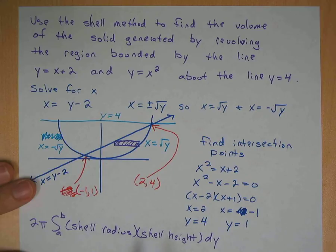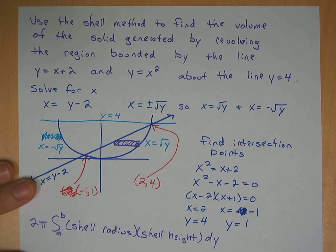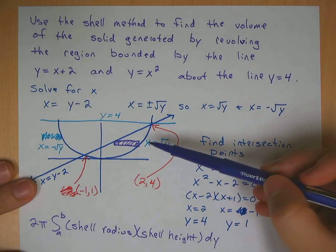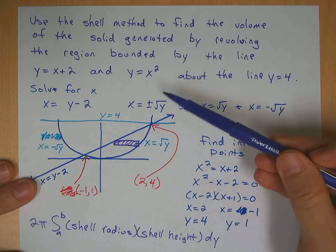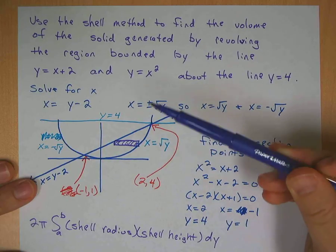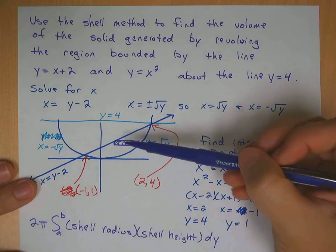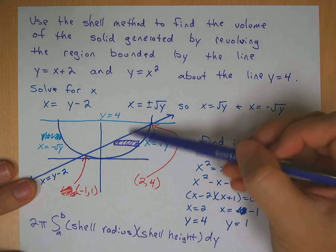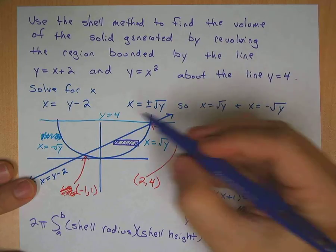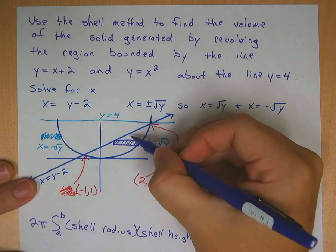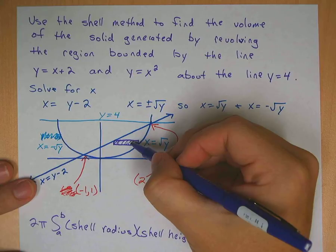So shell radius and shell height. So your shell radius, think about this shell revolving around this line. So what's the distance? This is a circle, so basically you're asking what's the distance between here and here. Well, if we know this is the line y equals 4, how far is it to this arbitrary shell that we drew?